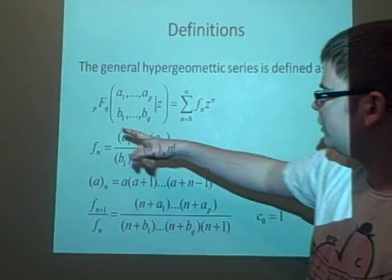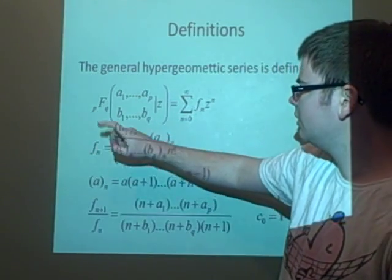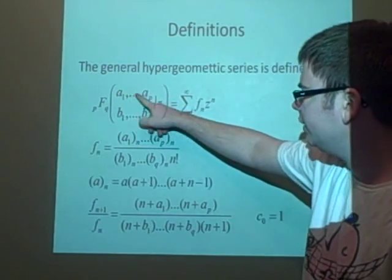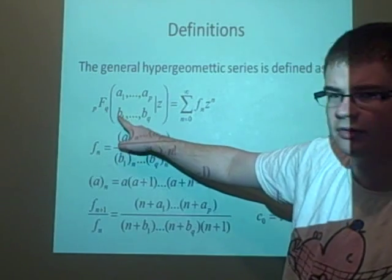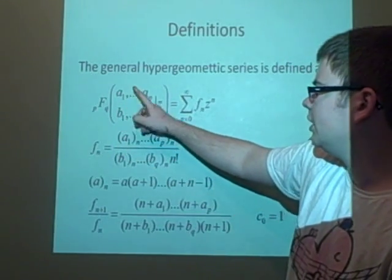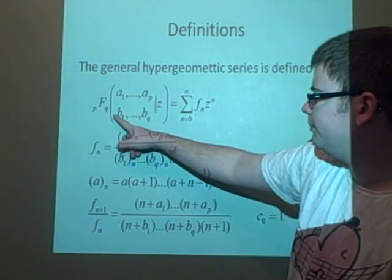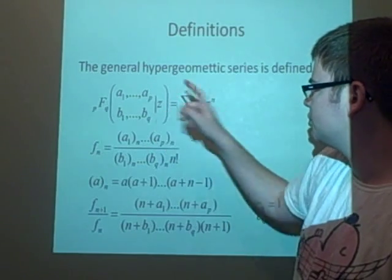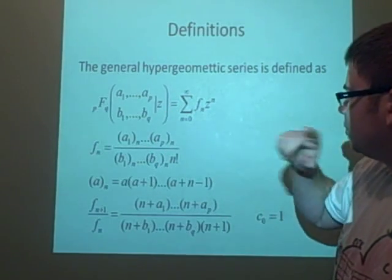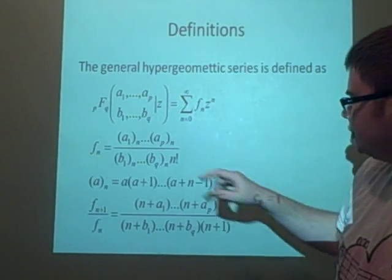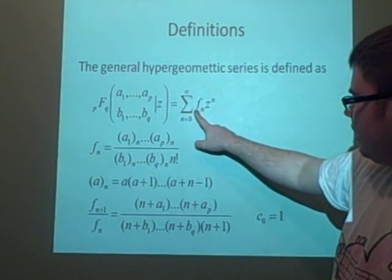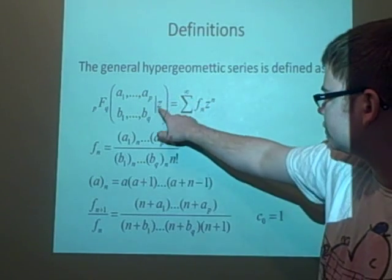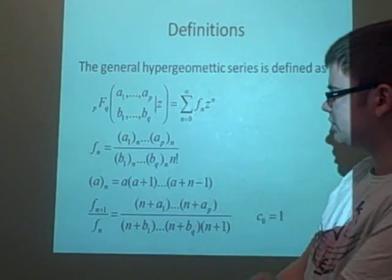The hypergeometric series has P on top and Q on the bottom, denoted as the number of different values. We name these a₁, a₂, a₃ up to aₚ, and b₁, b₂ up to bᵩ. Then we put z and write this as a summation from n equals 0 to infinity of fₙ times z to the power n. So z is our variable, and fₙ is defined here.